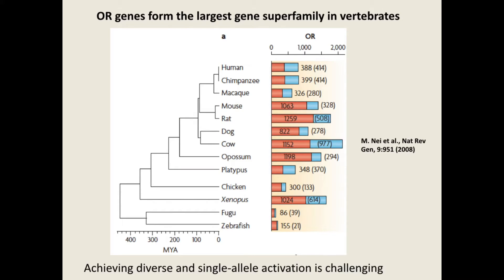This is highly non-trivial, since OR genes form the largest gene superfamily in vertebrates. The table here shows the estimated number of OR genes and pseudo-OR genes for a few animals. Pseudogenes can be transcribed to mRNAs, but the latter cannot be translated to proteins. Looking at rat as an example, there are more than 1200 OR genes and over 500 pseudogenes, so a neuron needs to select one and only one allele from thousands of possible candidates.